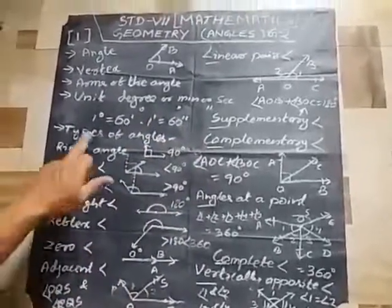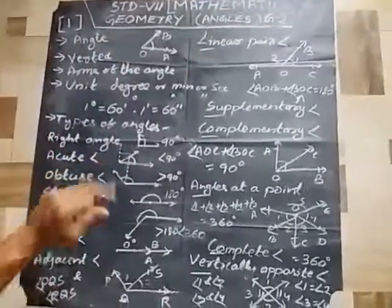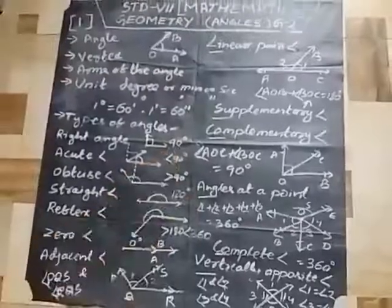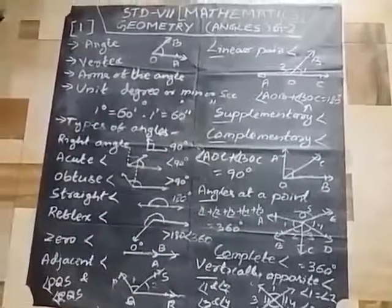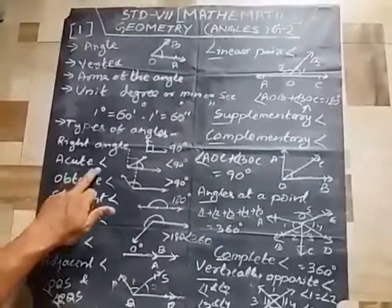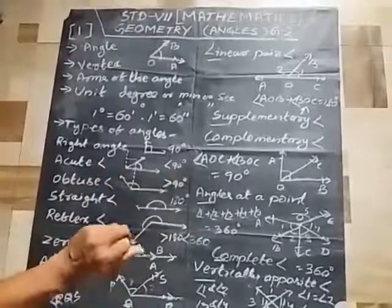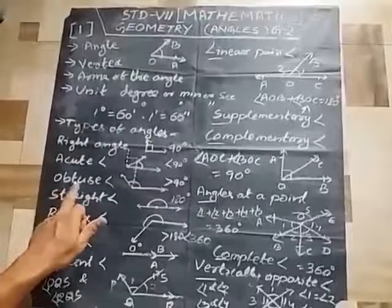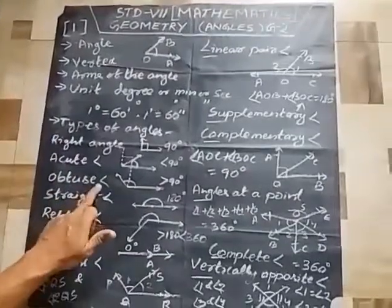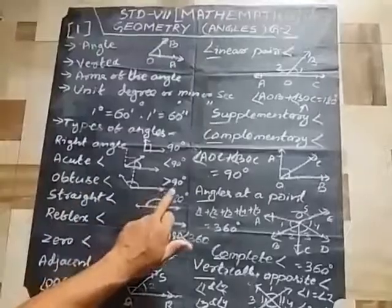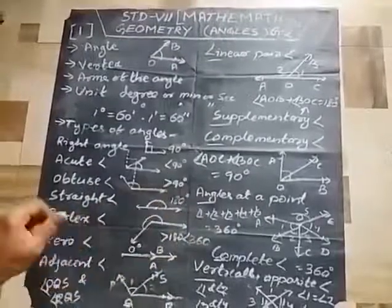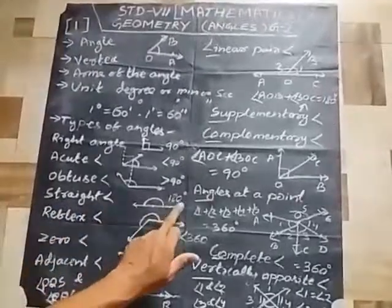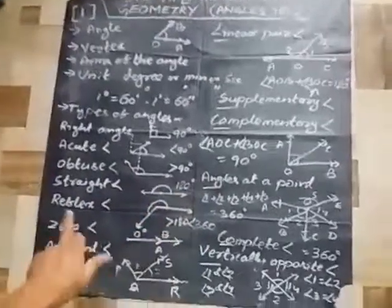Types of angles: Right angle — when two arms meet at 90 degrees, that is a right angle. Acute angle — when it is less than 90 degrees but more than 0 degrees, it is an acute angle. Obtuse angle — when it is greater than 90 degrees but less than 180 degrees. Straight angle — it is equal to 180 degrees.